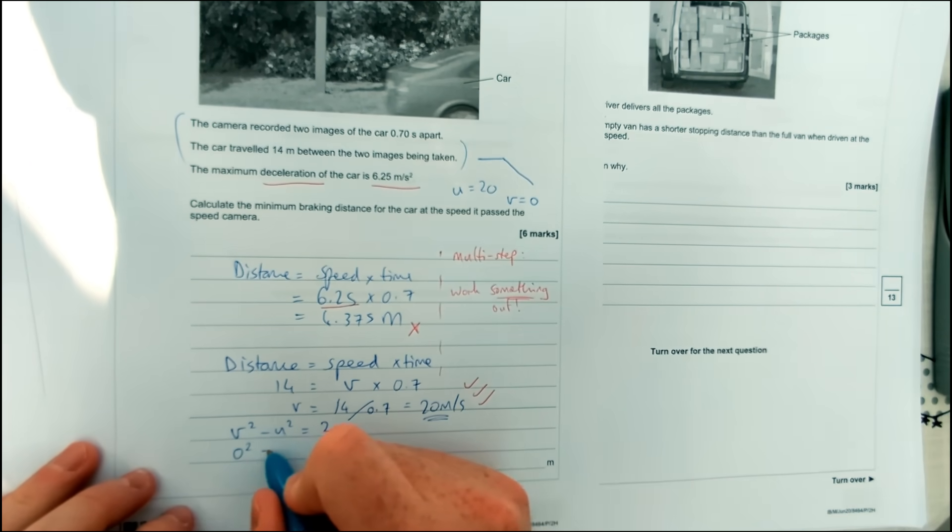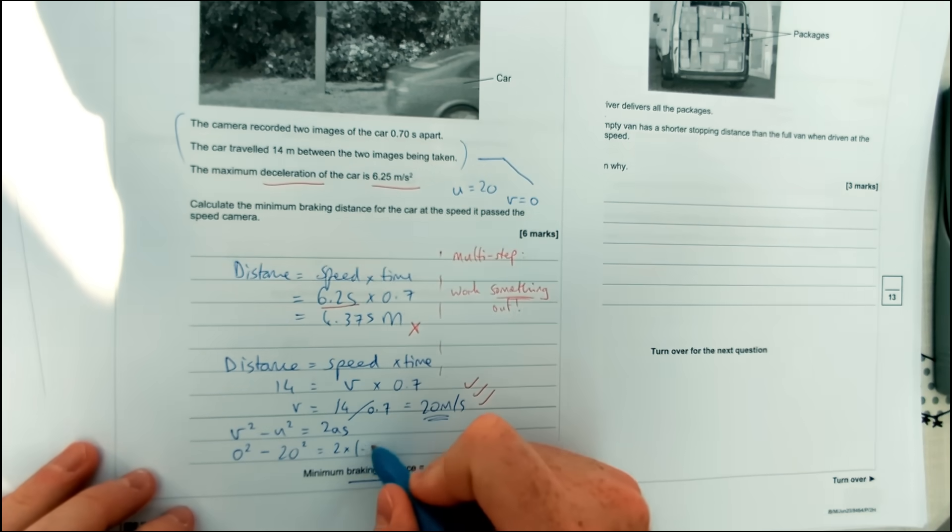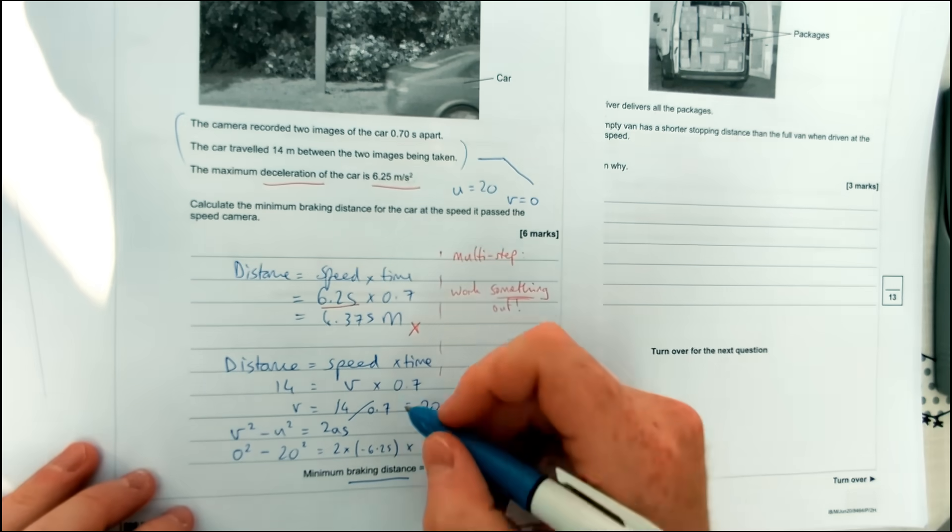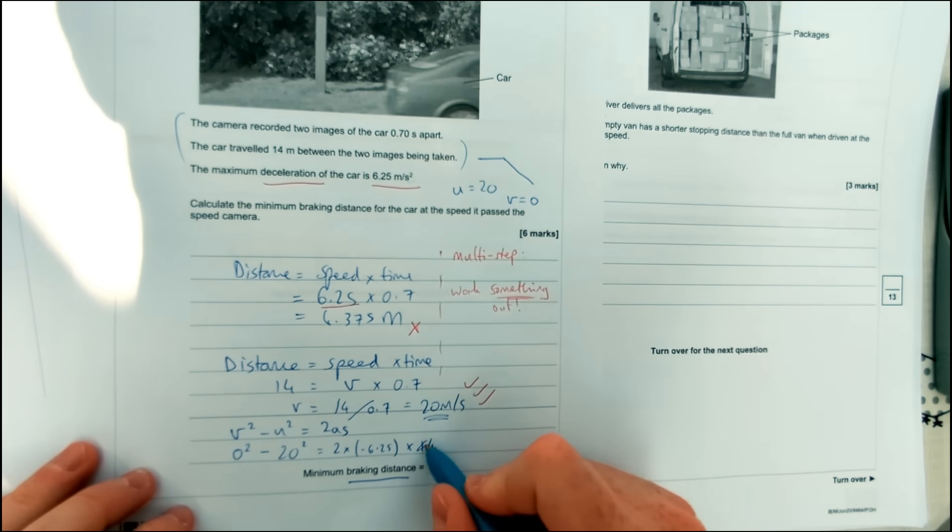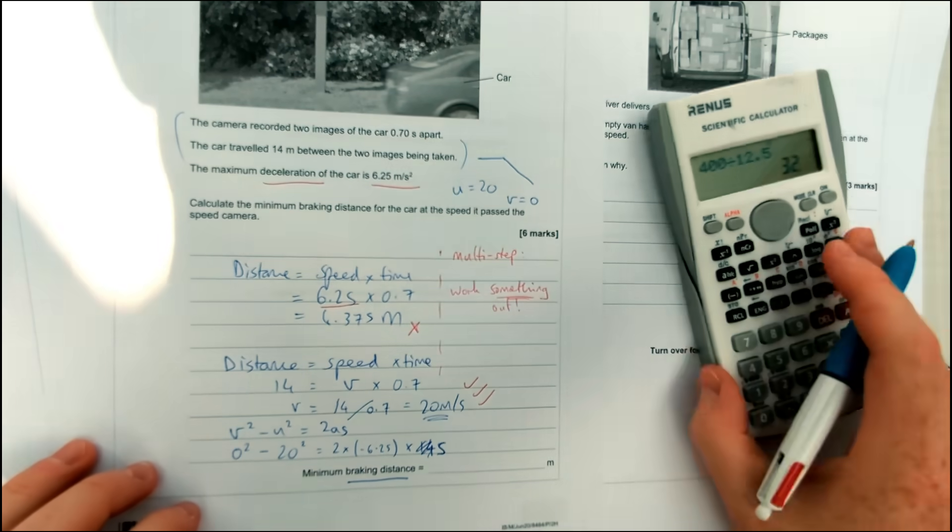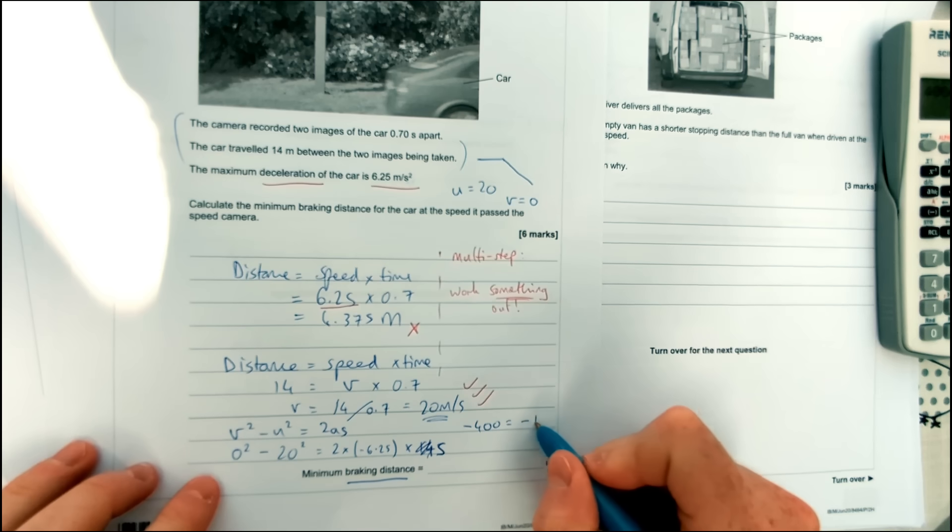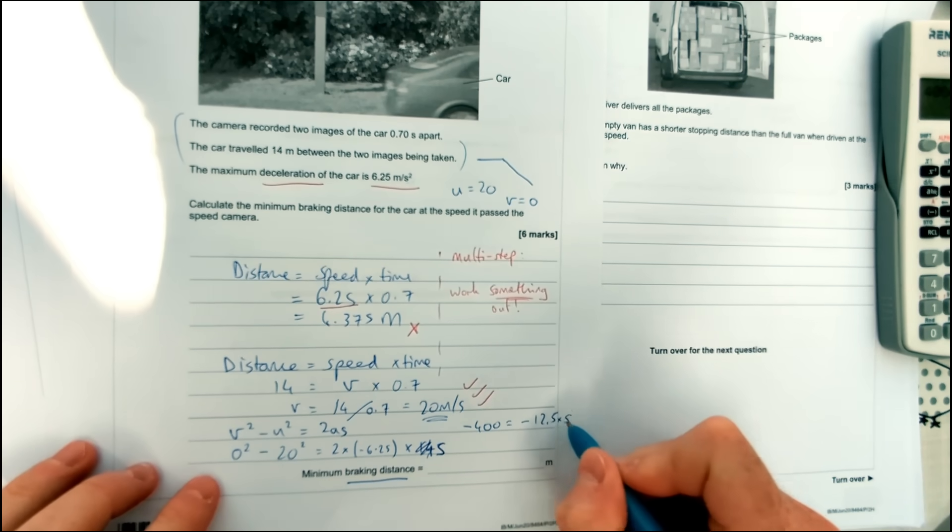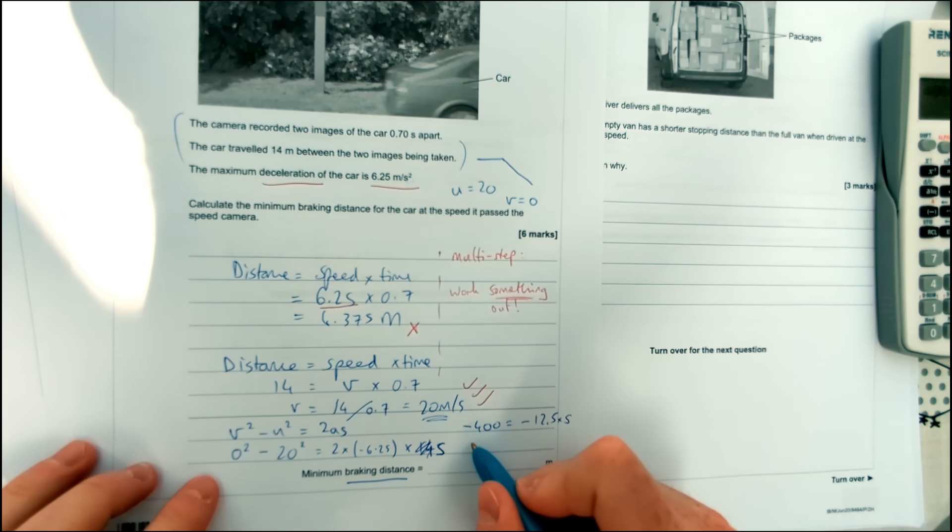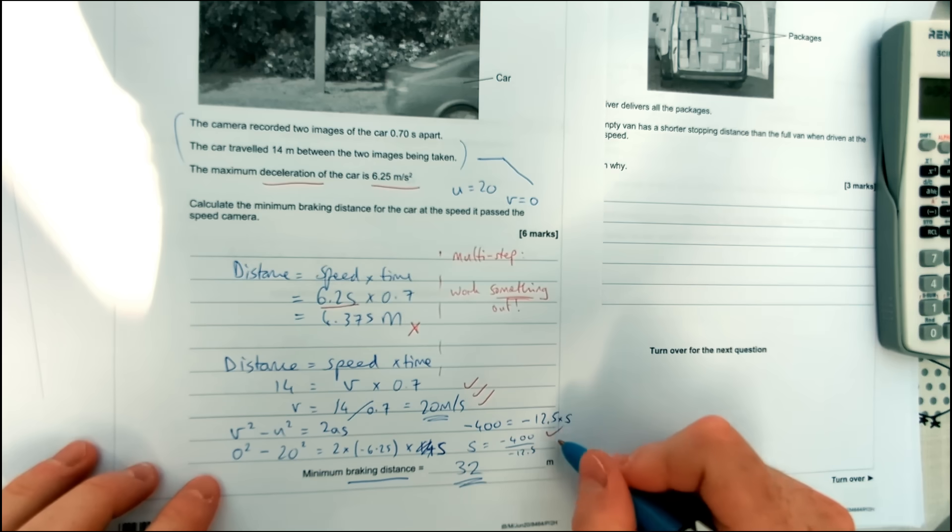So we've got 0 squared minus 20 squared equals 2 times by negative 6.25 times by the distance, which we don't know, so I'm going to leave that as an s. To do a little bit of rearranging, so we've got minus 400 on the left hand side and we've got minus 12.5 times by s on the right hand side. So we just divide this side by this side, and so distance equals minus 400 over minus 12.5, which equals 32 for this question. So that's how you get your full marks for a question like this.